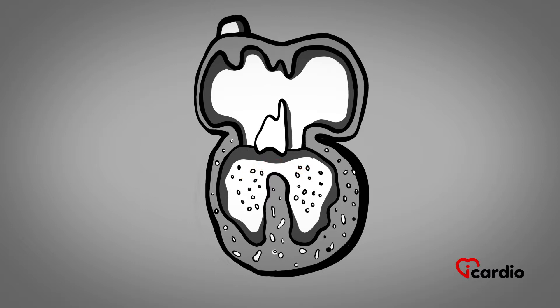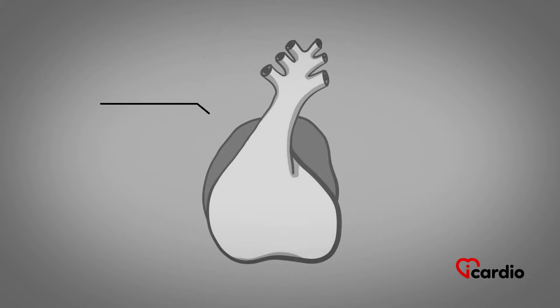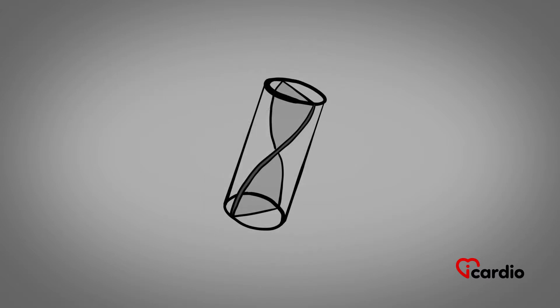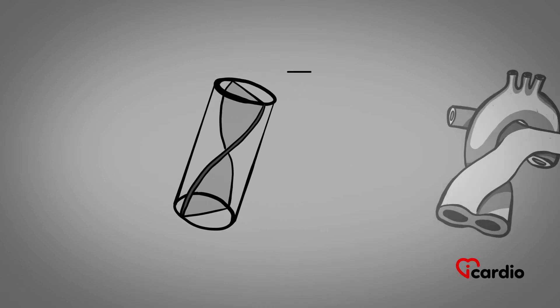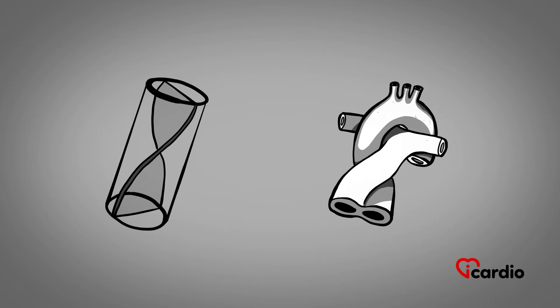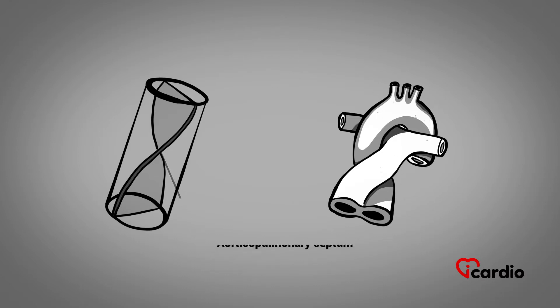Shortly after the beginning of the atrioventricular separation, at the fifth week, another separation is starting at the level of the arterial bulb. It is spiral shaped, unlike the atrioventricular septum, which is rather straight. This spiral separation forms the aorta and pulmonary artery, hence its name, the aorticopulmonary septum.